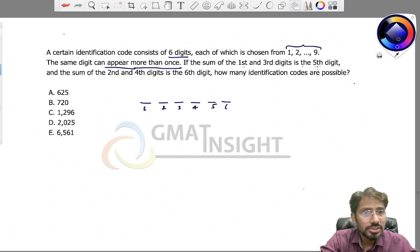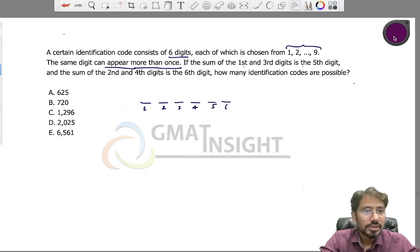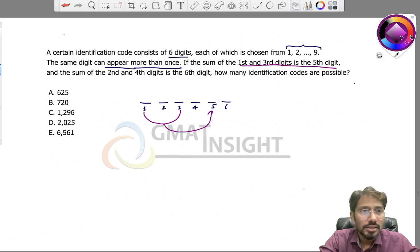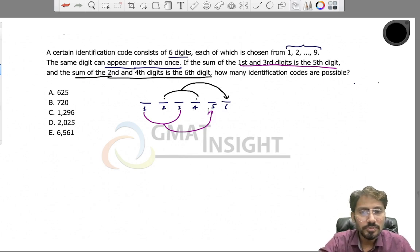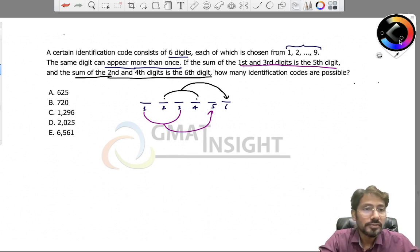Let me represent the positions: first place, second place, third place, fourth place, fifth place, sixth place. The sum of the first and third places should equal the fifth place. And the sum of the second and fourth digits should equal the sixth digit. This is how the number has to be found—sum of one and third place should be fifth place, sum of second and fourth place should be sixth place. How many such identification codes are possible?